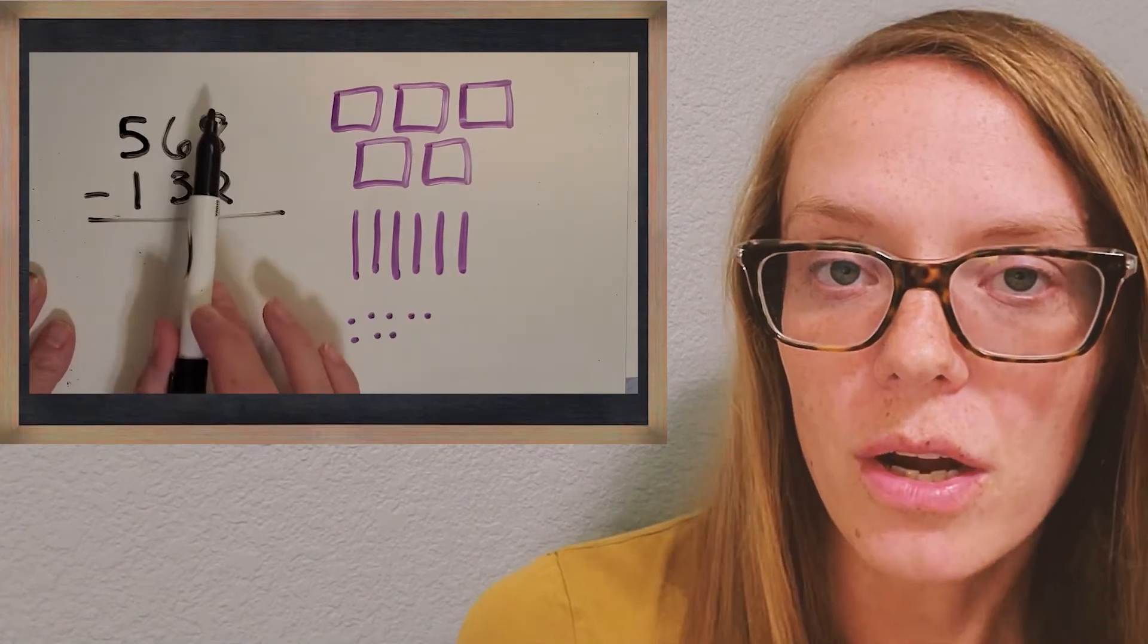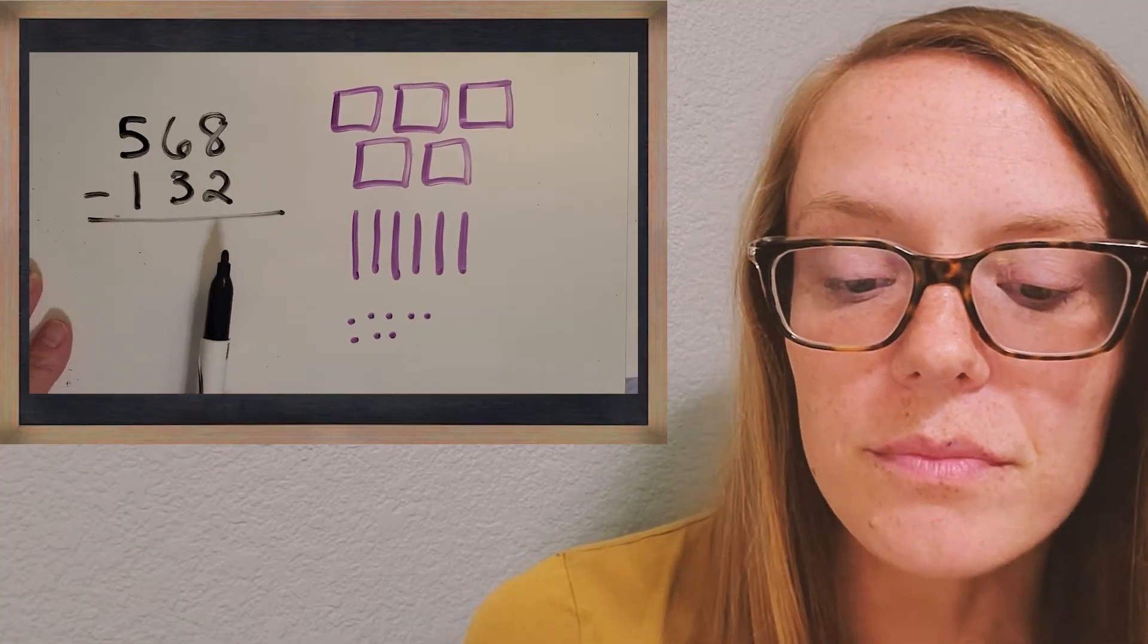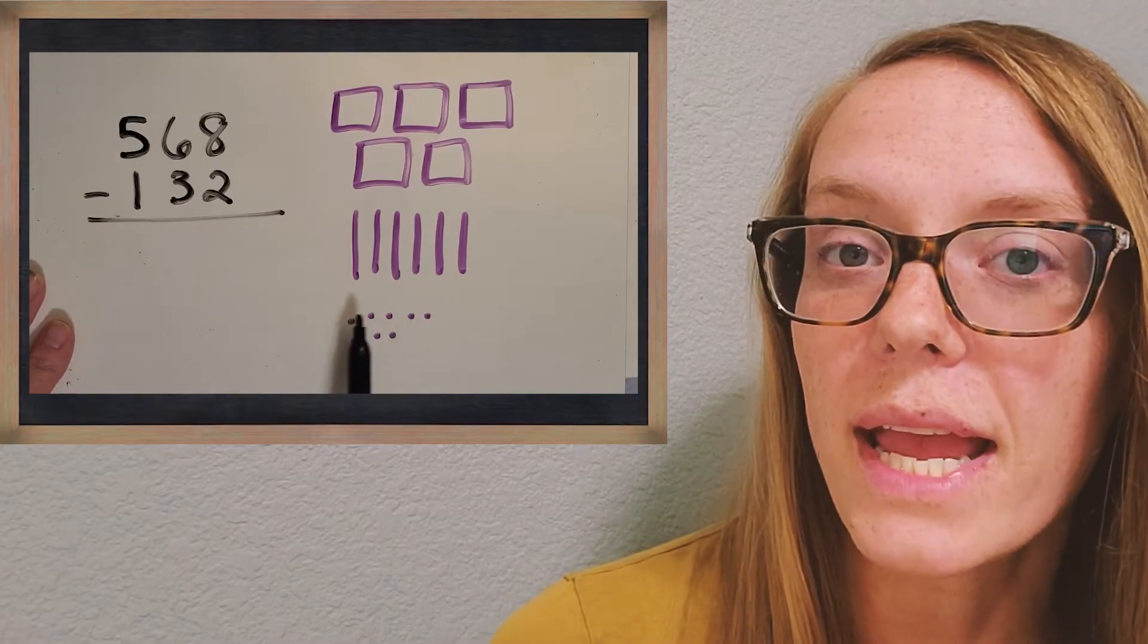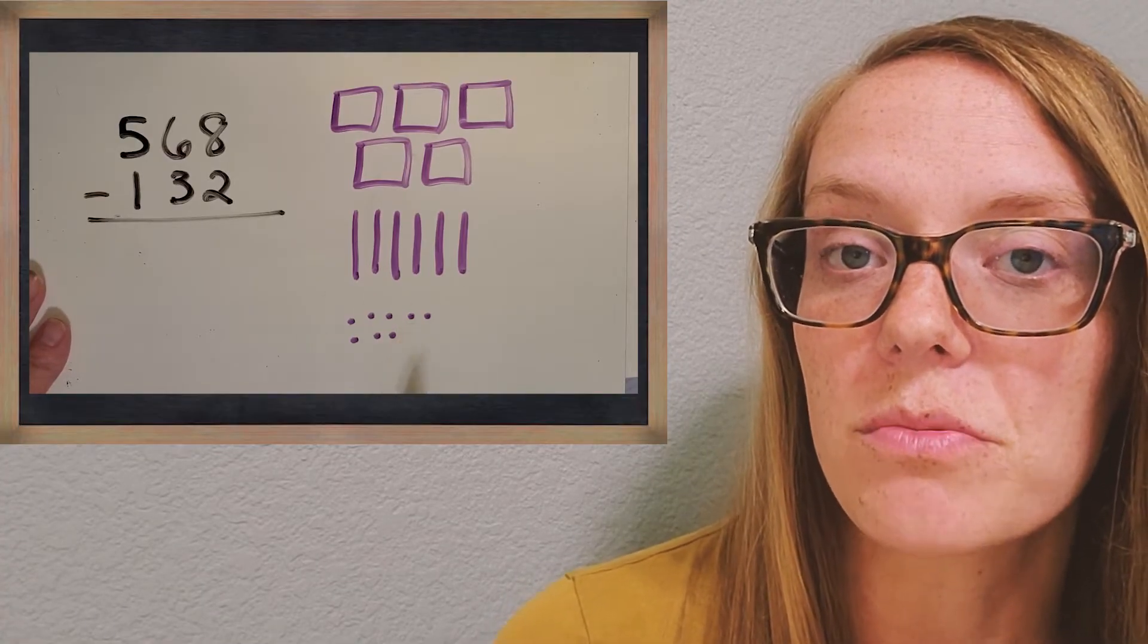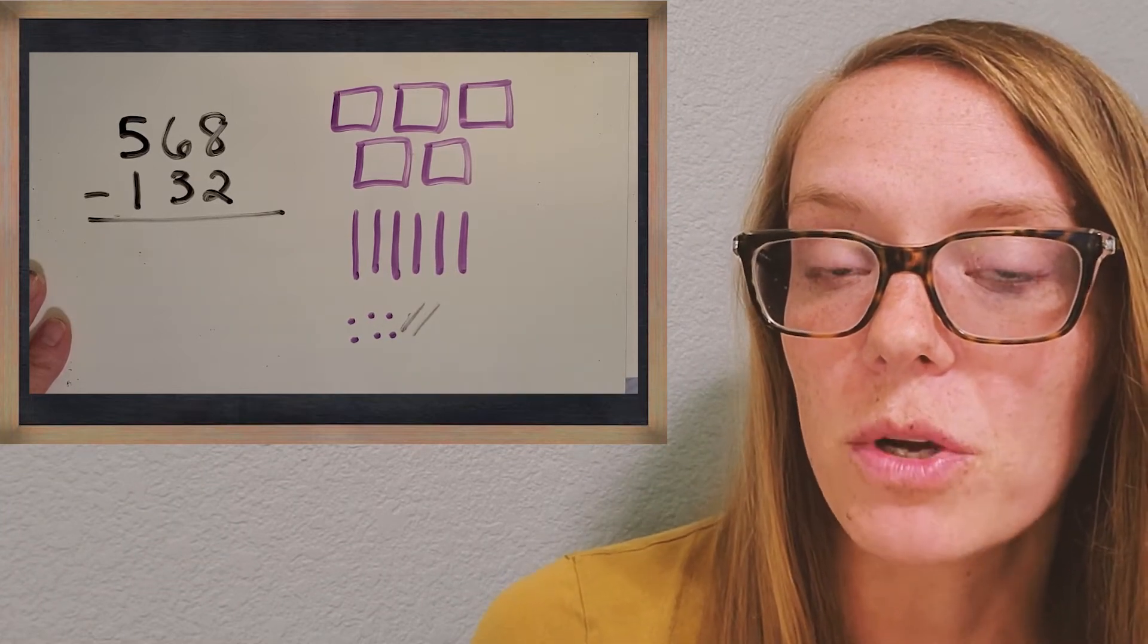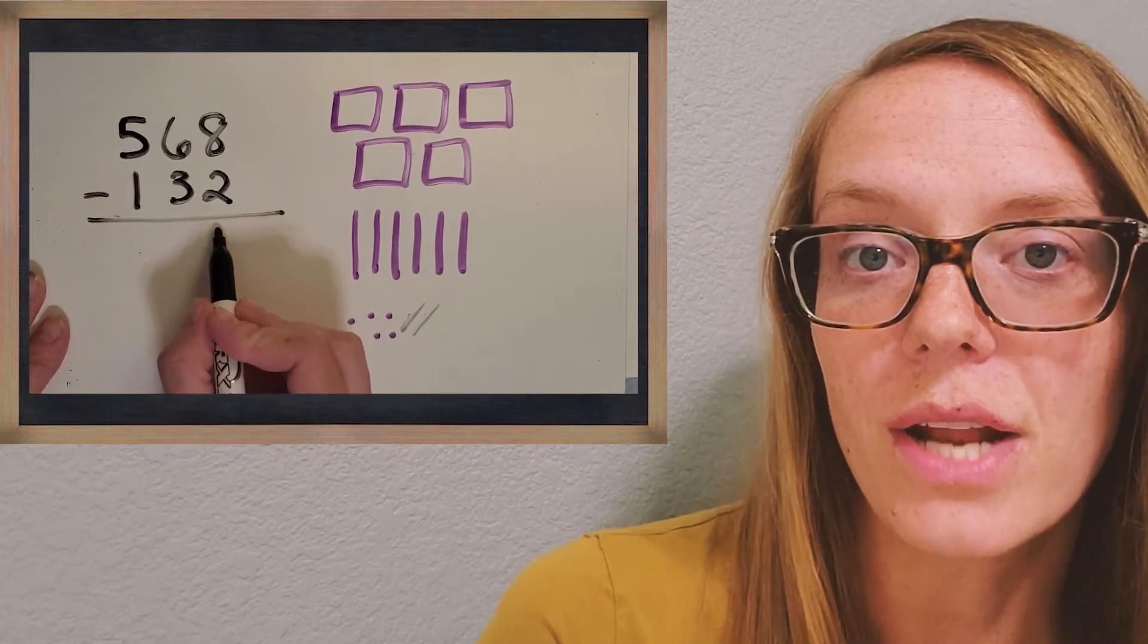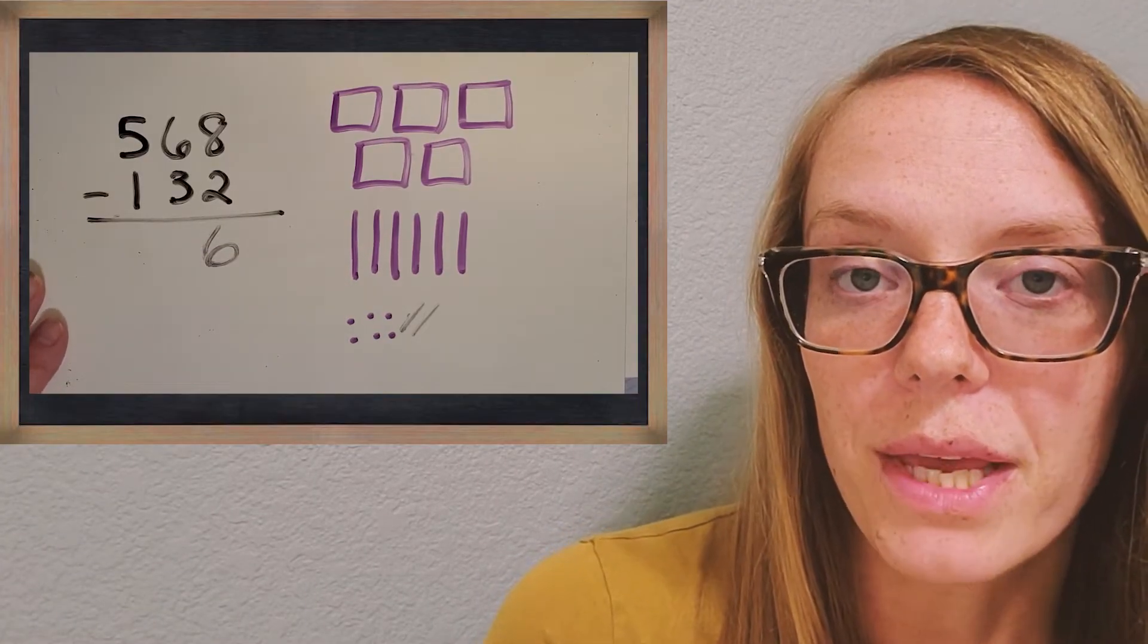So we always want to start in the smallest place value when we add or subtract. And so we can just start with those ones or those units that we have. And we start with 8. And we can use those base 10 blocks really easily to just take away 2. So what do you have left once you take away 2? Okay, great, 6. And in our standard algorithm, 8 minus 2 is 6. So we'll just put that in the ones place.